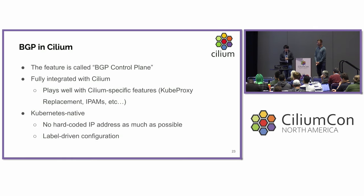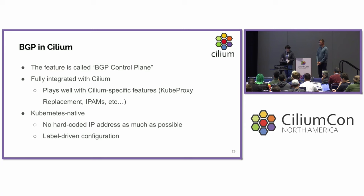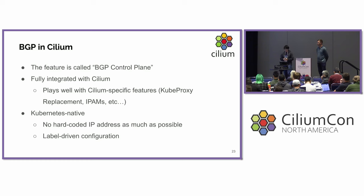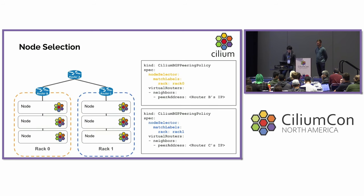Let's talk about Cilium and how BGP is used in it. Cilium has a feature called BGP control plane — a BGP implementation designed from scratch to be fully integrated with Cilium. It plays very well with Cilium-specific features like kube-proxy replacement, or Cilium-specific IPAM implementations like cluster-pool IPAM and multi-pool IPAM. It is also Kubernetes-native: we eliminated hard-coded IP addresses from configuration as much as possible, because IP addresses are very ephemeral in the Kubernetes world. Instead, we rely heavily on labels to configure things.